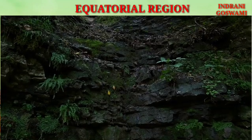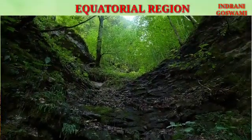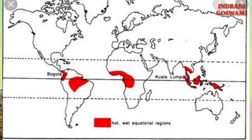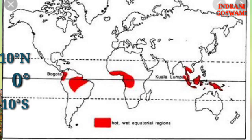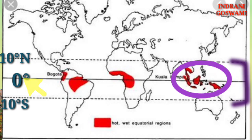Today we are going to study the equatorial region. To understand any region, we first need to know its location. The equatorial region extends between 0° to 10° north and south of the equator. In Asia, the regions with equatorial climate include Indonesia, Papua New Guinea, Malaysia, and the southern part of the Philippines.